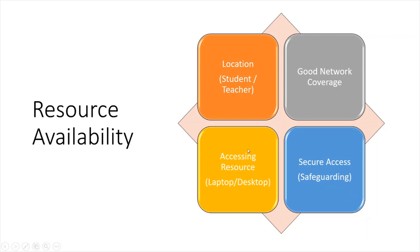Resource availability is another major factor for online versus offline. Four key points: first, location — if you're in a remote area without good network coverage, online classes are defeated. Second, good network coverage enables video conferencing and internet access. Third, accessing resources requires a laptop or desktop. Fourth, secure access is important — that's a kind of safeguarding consideration.